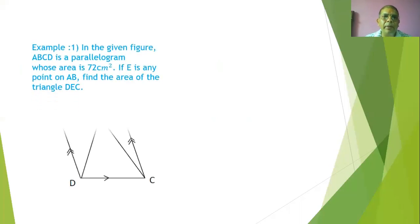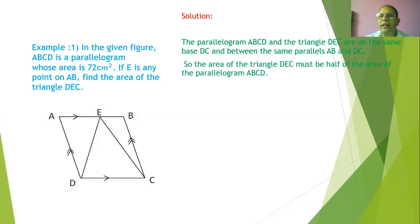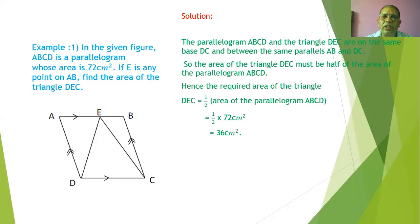Short question, two marks. Question number one: in the given figure, ABCD is a parallelogram whose area is 72 cm². E is any point on AB. Find the area of triangle DEC. Parallelogram ABCD and triangle DEC are standing on the same base and between the same parallels. So the area of triangle is half the area of the parallelogram: 1/2 × 72 = 36 cm².